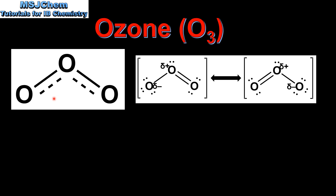On the left we have the resonance hybrid structure for ozone. On the right we have the two resonance structures of ozone. As you can see, ozone is a polar molecule with the negative dipole being on this oxygen and the positive dipole being on this oxygen.